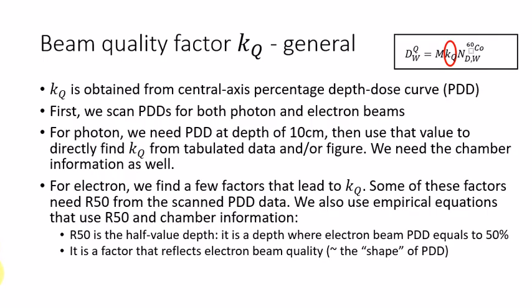In general, KQ is obtained from central axis percentage depth dose curve, or PDD. So before we do any TG51 point dose measurement, the first thing we need to do is scan the PDDs for both photon and electron beams in a water tank.